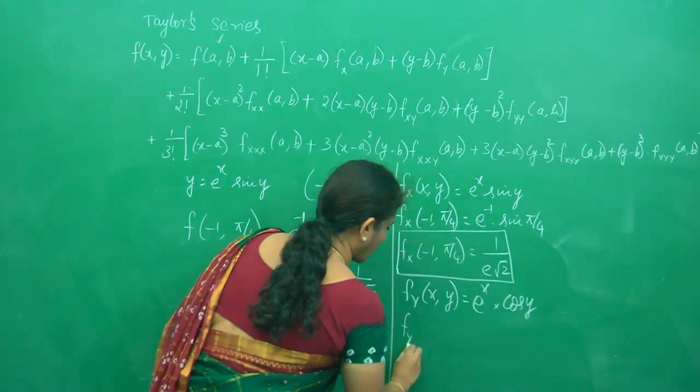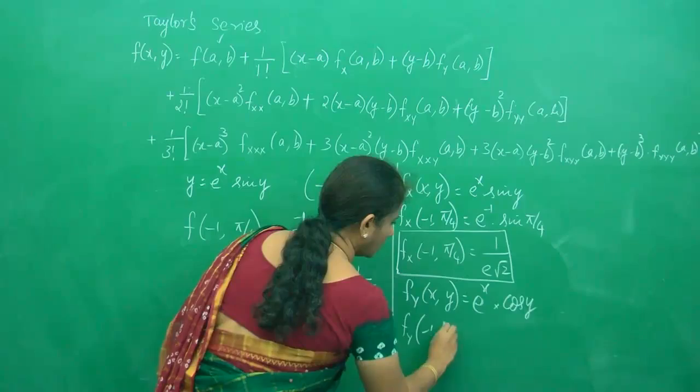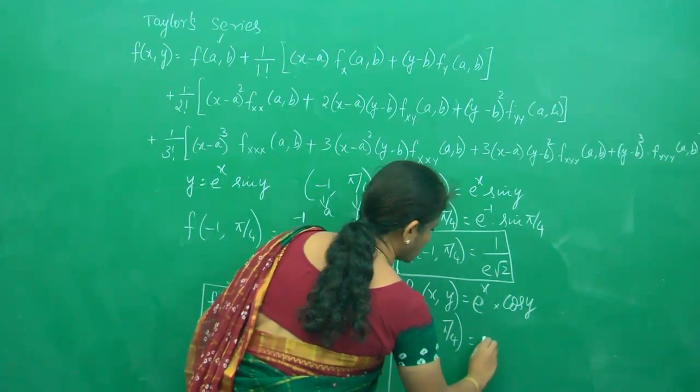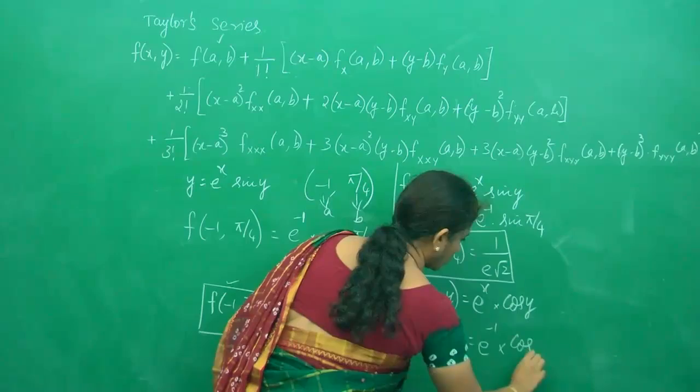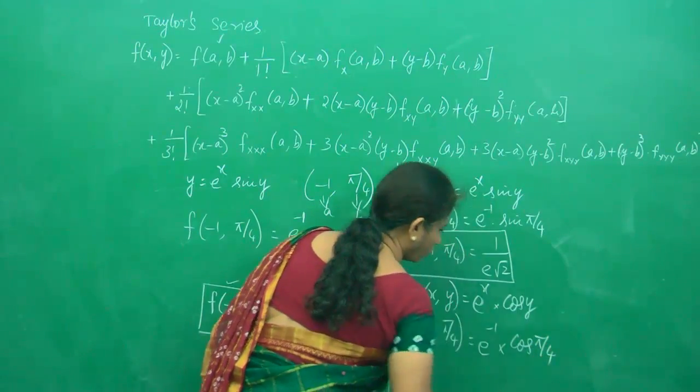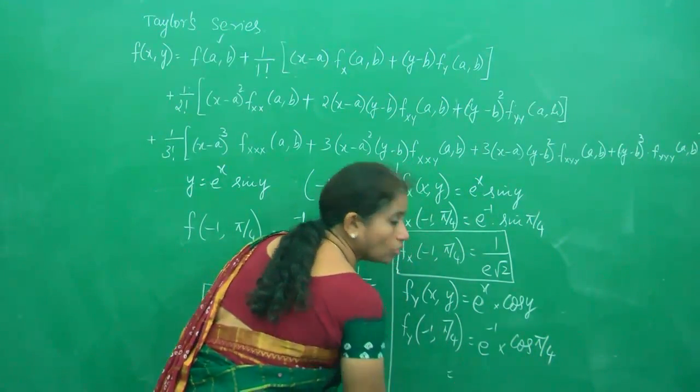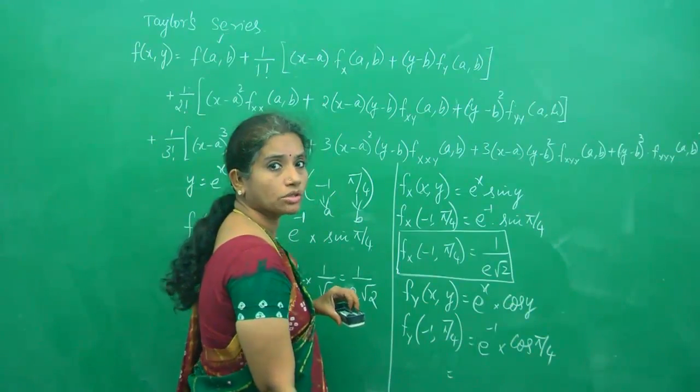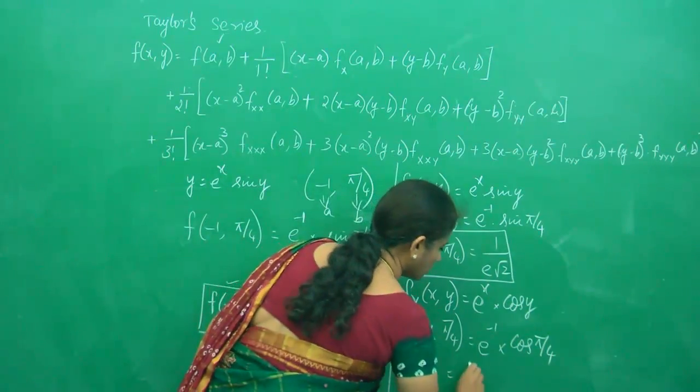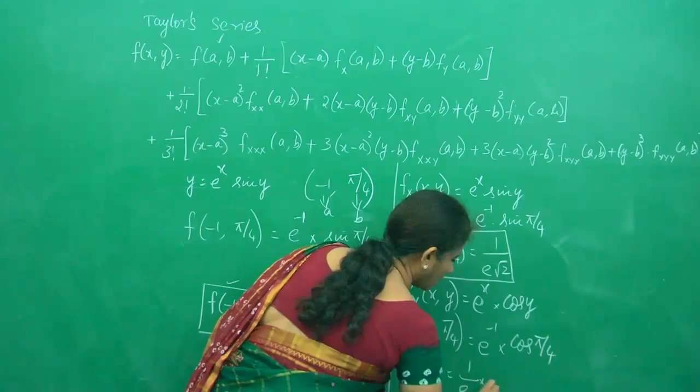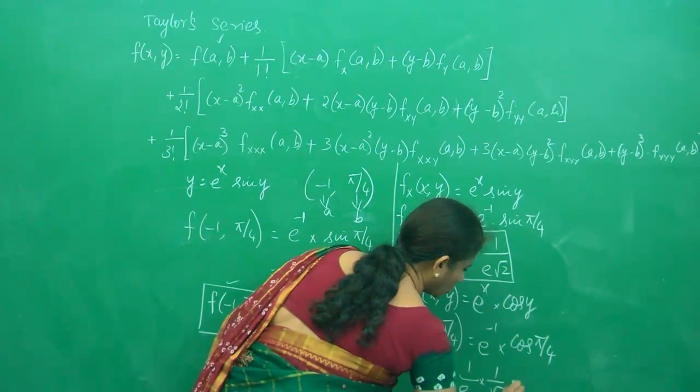So what is f_y(-1, π/4)? This is e^(-1) cos(π/4). You know cos(π/4) is 1/√2.